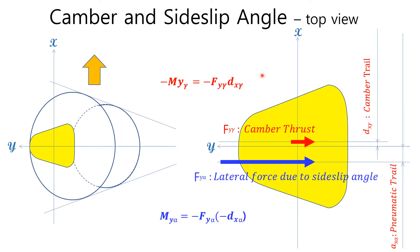As you can see in the picture, the directions of camber thrust and lateral force due to side slip angle are the same, but their locations are different along the x-axis. Camber thrust has a forward shift of d sub x-γ and lateral force due to side slip angle has a backward shift of a sub x-α along the x-axis with respect to the center of the tire contact patch. Therefore, the directions of the resulting moments are opposite each other about the x-axis. However, the direction of the resultant moment is the same as that of the self-aligning moment because the camber torque is much smaller than the self-aligning moment due to side slip angle.